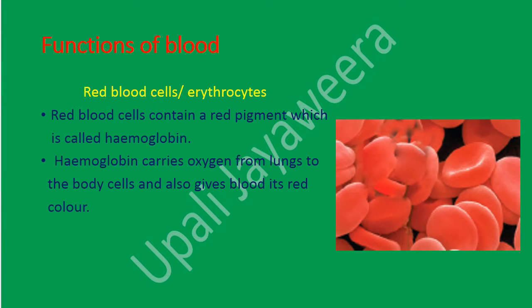What are the functions of blood? First, red blood cells or erythrocytes. Red blood cells contain a red pigment called hemoglobin. These cells are biconcave in shape. Hemoglobin carries oxygen from the lungs to the body cells and also gives blood its red color.